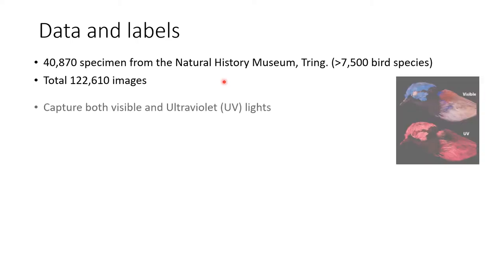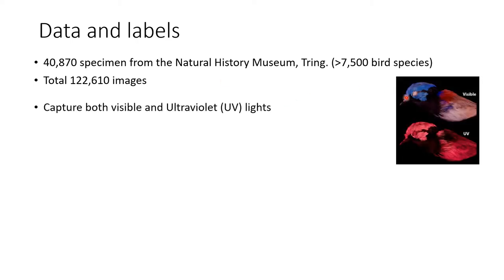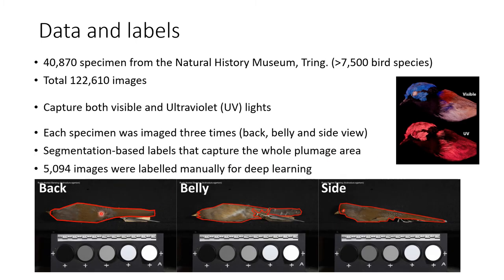Each photo has both visible and UV values, and each specimen has three views. We use segmentation-based labels to measure the whole plumage area of the bird. 5,094 photos were manually labeled as the training set for deep learning.